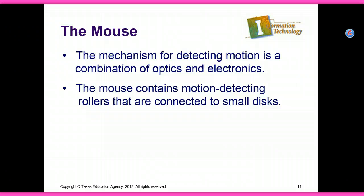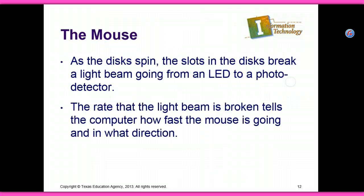The mechanism for detecting motion is a combination of optics and electronics. The mouse contains motion detecting rollers that are connected to small disks. As the disks spin, the slots in the disk break a light beam going from the LED to a photo detector. The rate at which the light beam is broken tells the computer how fast the mouse is moving and in what direction.